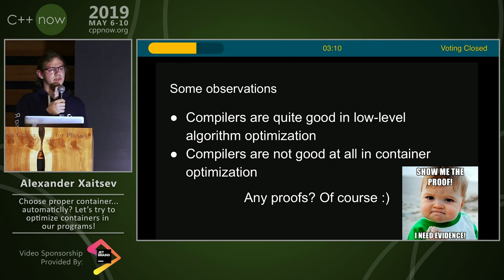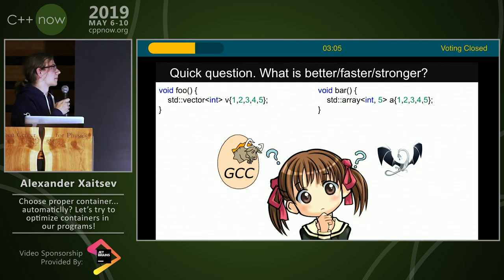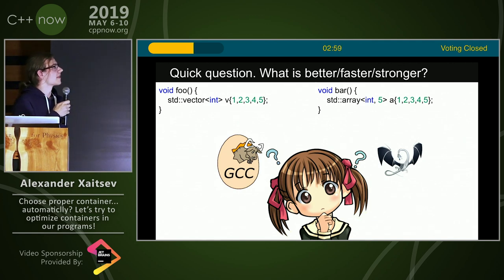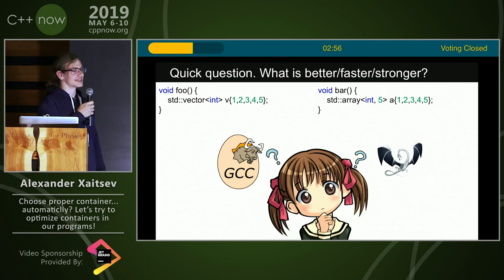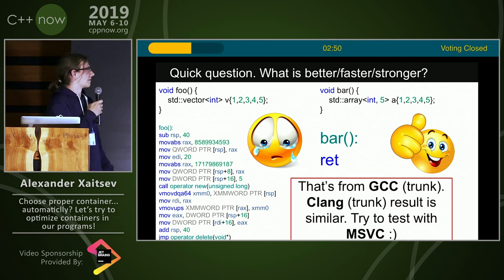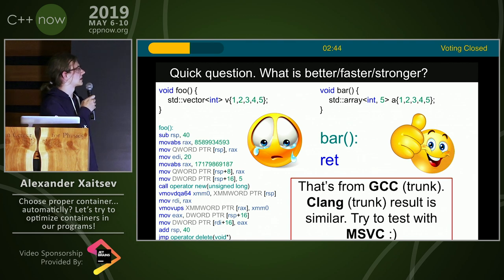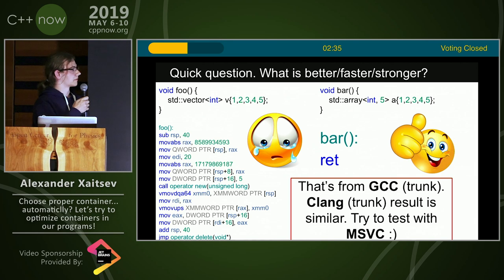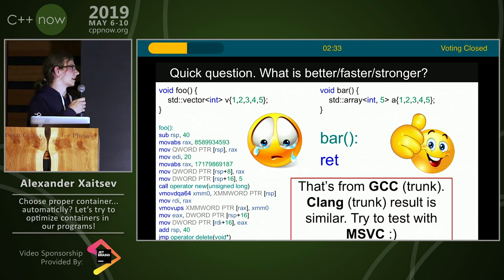I'm not talking about reduced allocation and similar stuff. One example: we have two functions, foo and bar — which is faster? Bar is much faster. They are really equal, except one thing: vector makes dynamic allocations, std::array does not. Compilers cannot optimize this stuff — only Clang in such simple cases, but not for std::vector yet.